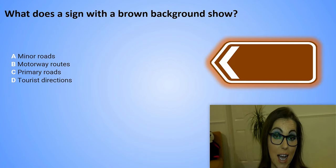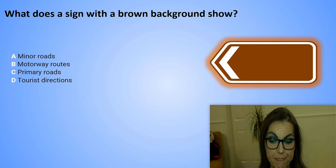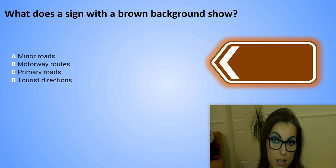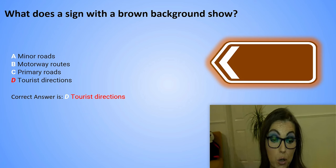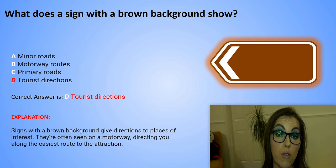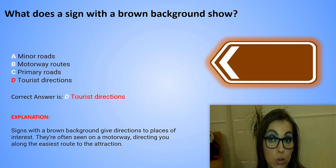What does a sign with a brown background show? A. Minor roads. B. Motorway routes. C. Primary roads. Or D. Tourist directions. The correct answer is D. Tourist directions. Explanation: Signs with a brown background give directions to places of interest. They are often seen on a motorway directing you along the easiest route to the attraction.